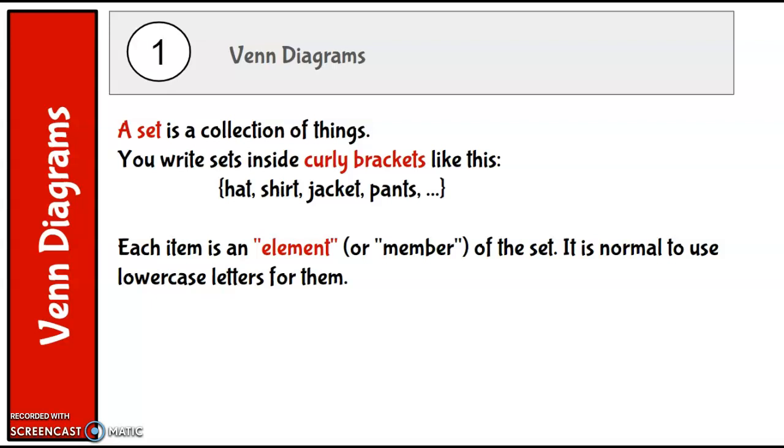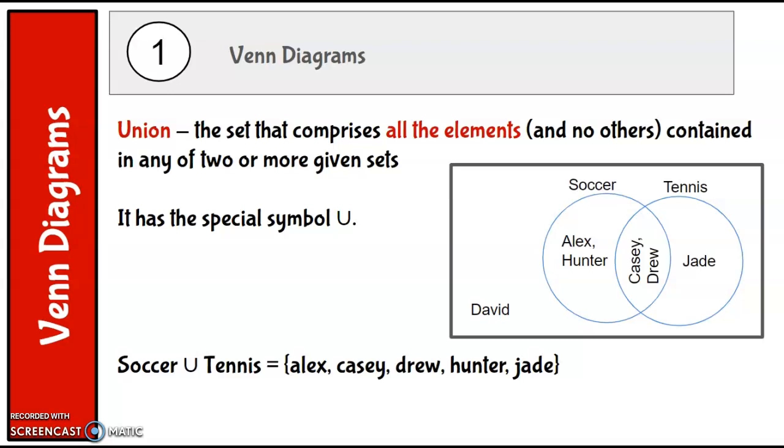The union is the set that comprises all the elements and no others contained in any of two or more given sets, and it has that special symbol U. It looks a little funny as far as U's go, but that's the symbol for union of two sets.